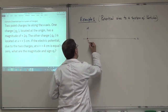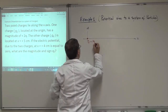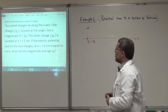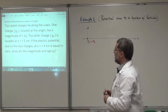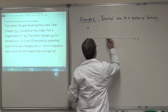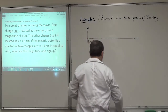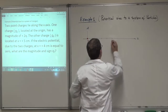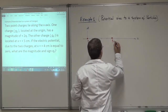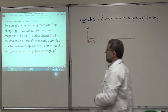So Q1 is equal to plus 2Q. And the other is located at x equals 5 centimeters. So if this is 1, 2, 3, 4, 5 — my charge Q2 is here at 5 centimeters. And I don't know what its value is, Q2.